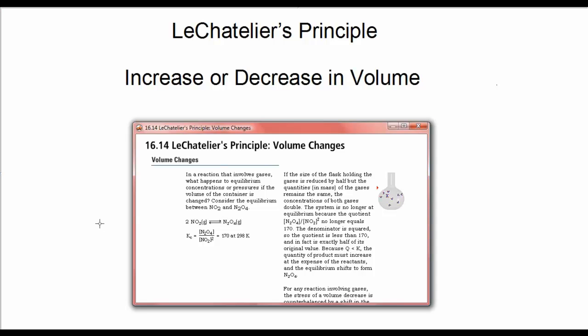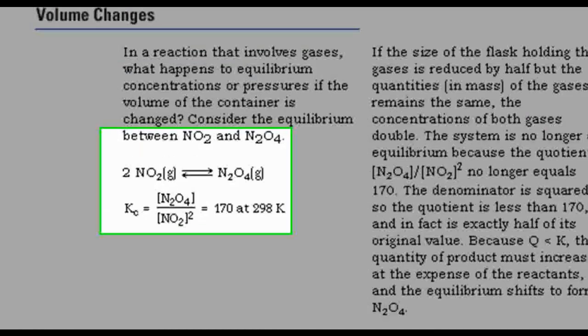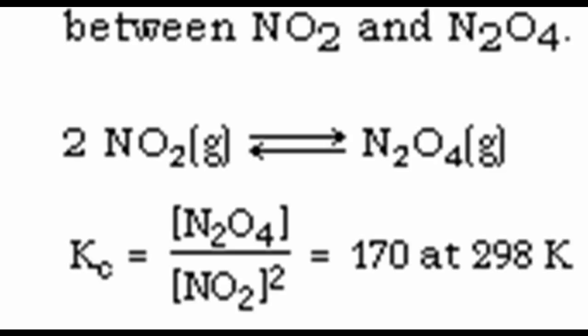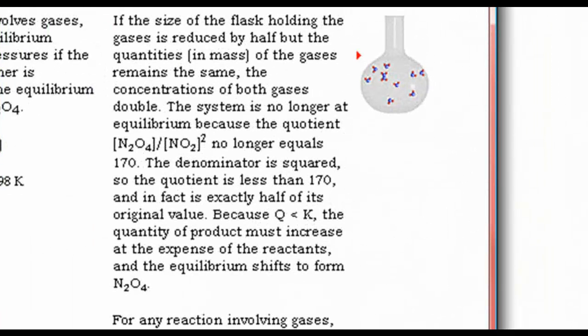Now let's consider Le Chatelier's Principle for molecules in the gas phase when we increase or decrease the volume of the container. The reaction is between NO2 and N2O4. There are two molecules of NO2 for every one molecule of N2O4. Predicting what occurs when we change volume can be tricky. The key thing to keep in mind is the number of gas molecules — keep track of them.